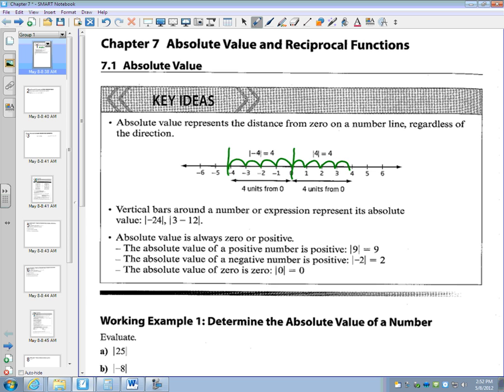Vertical bars around a number or expression represent its absolute value. Think of it like a distance. So the absolute value of 24, the absolute value of 3 minus 12. The way to look at absolute value is similar to brackets. You must first do 3 minus 12, which is negative 9, and then evaluate the absolute value.